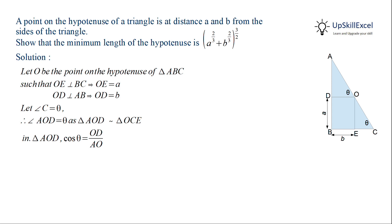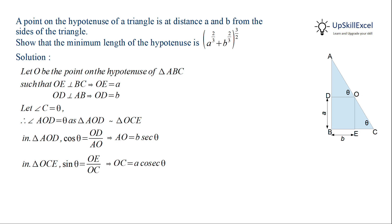In triangle AOD, cos theta equals adjacent over hypotenuse, which is equal to OD over AO. Therefore, length AO is equal to B sec theta. Similarly, in triangle OCE, sin theta equals opposite over hypotenuse, which is equal to OE over OC. This implies that OC is equal to A cosec theta.